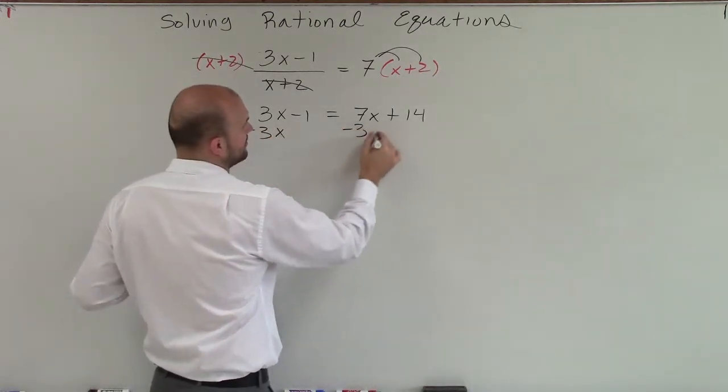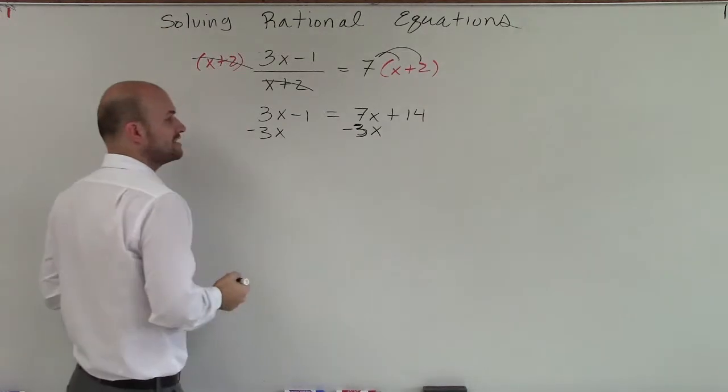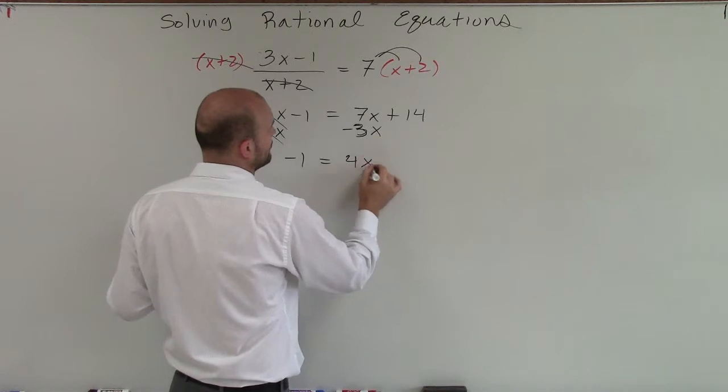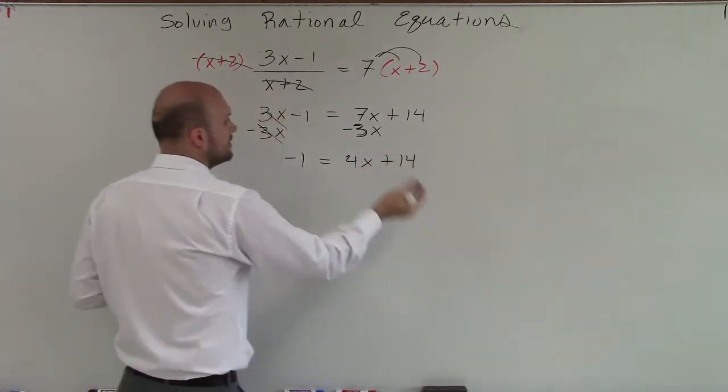So I'll subtract the 3x on both sides. I chose to subtract the 3x, so therefore, these will subtract to 0. And I'm left with negative 1 equals 4x plus 14.